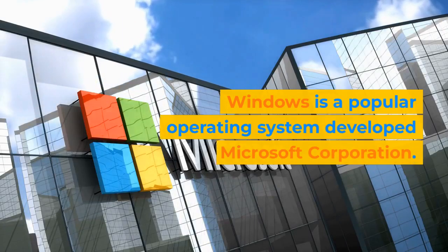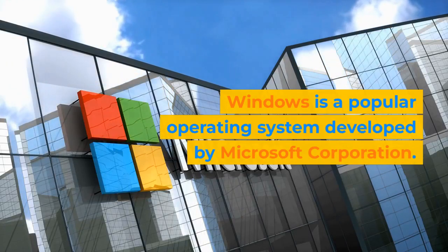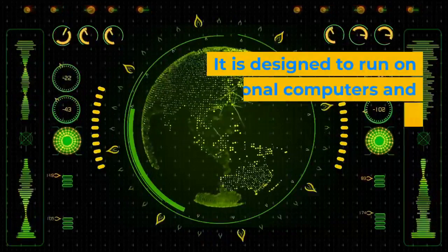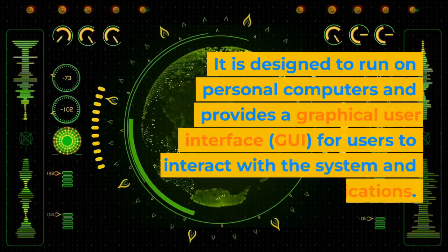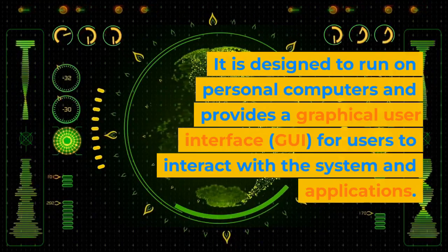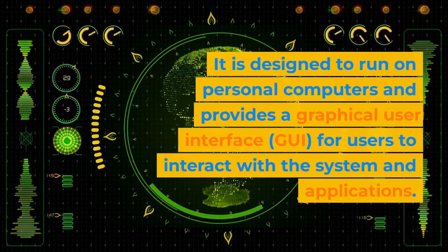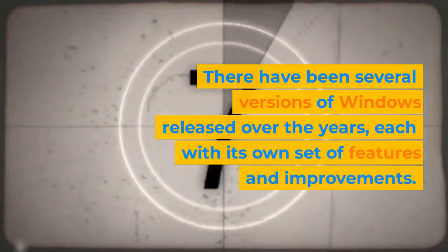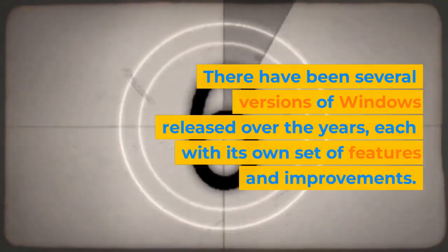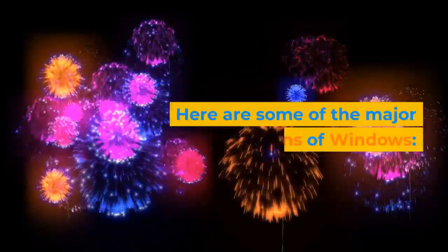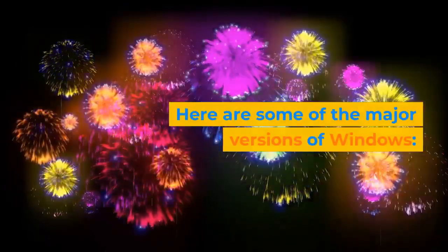Windows is a popular operating system developed by Microsoft Corporation. It is designed to run on personal computers and provides a graphical user interface for users to interact with the system and applications. There have been several versions of Windows released over the years, each with its own set of features and improvements. Here are some of the major versions of Windows.